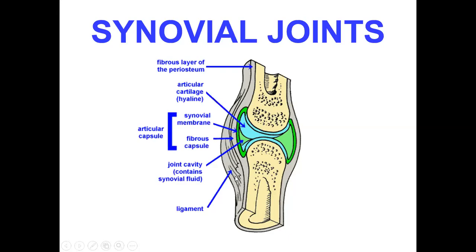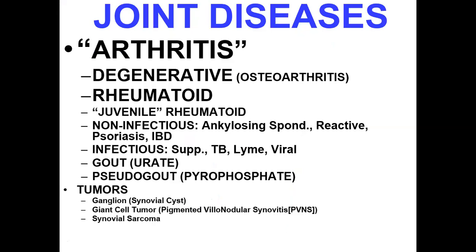Joints allow movement and provide mechanical stability. Diseases of joints may be inflammatory, degenerative, or infectious, and sometimes tumors may arise in the joints. Arthritis — inflammation of the joints — may be degenerative type, that is osteoarthritis, or rheumatoid arthritis. We will mainly go into the details of the common types of arthritis.